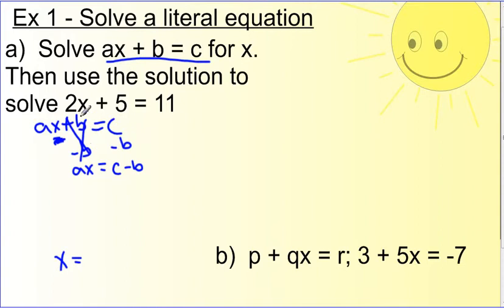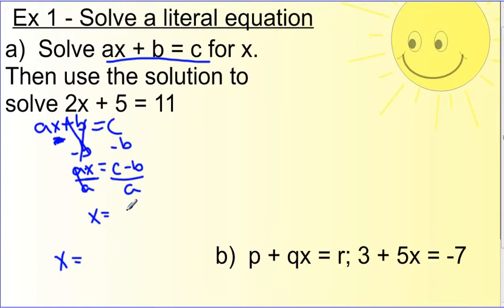So we got rid of the addition by doing the opposite. Now we have ax equals c minus b. The x is being multiplied by a, so the way we get rid of that is we divide both sides by a. These cancel, and we get x equals c minus b divided by a. That's actually our answer — x equals c minus b over a.